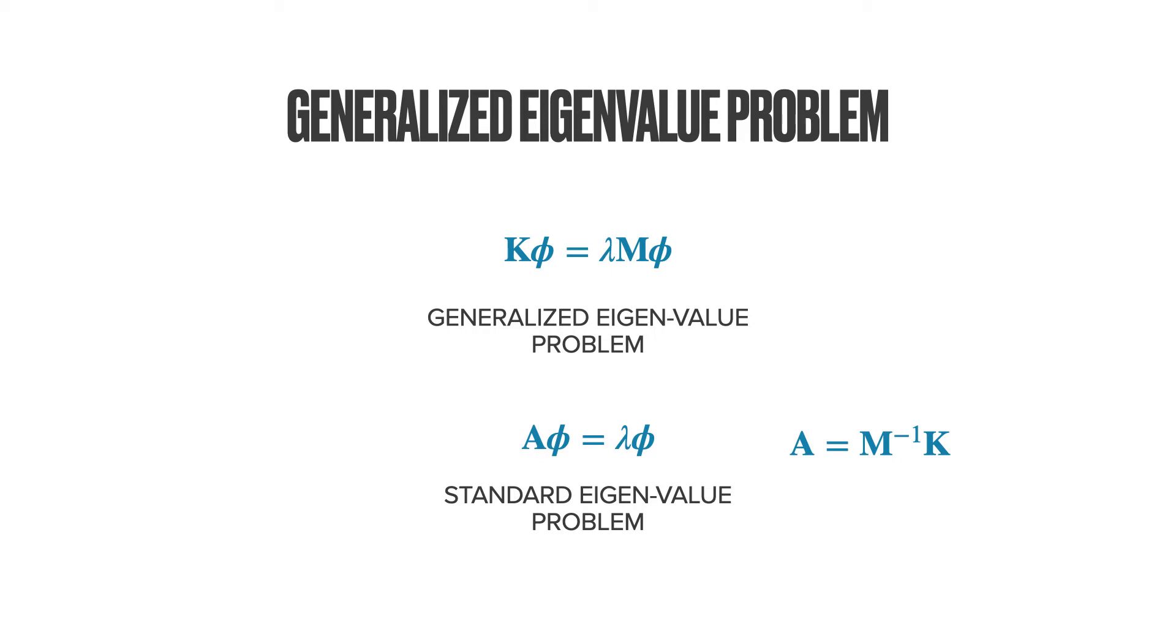But in case of large systems, that is, for a stiffness and mass matrix with millions of rows and columns, this is not feasible.